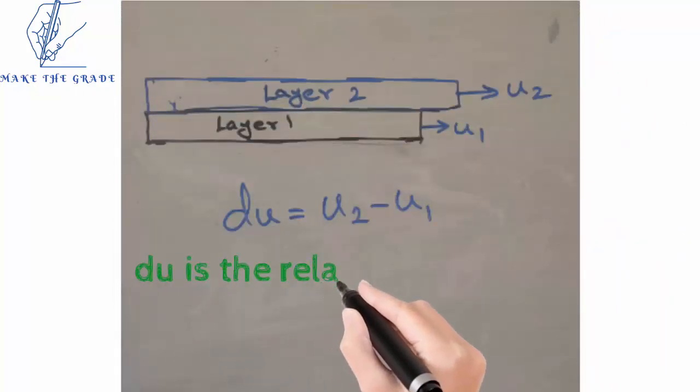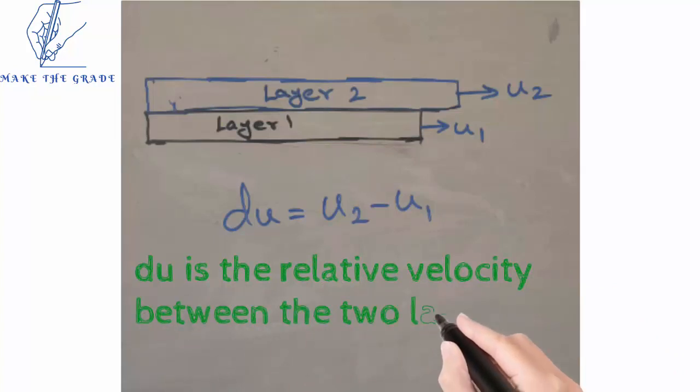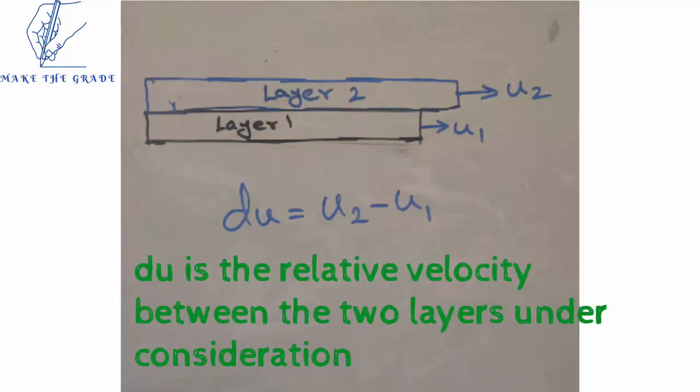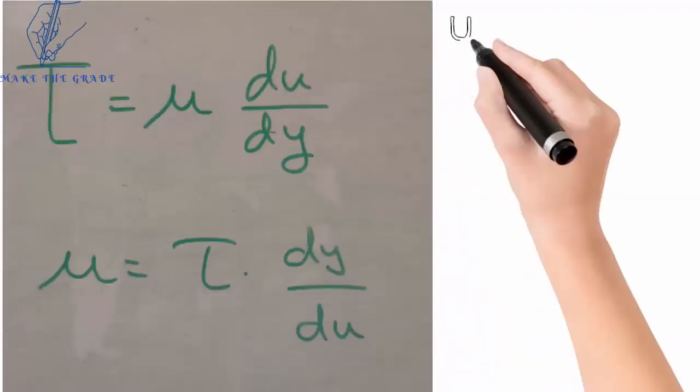Let us concentrate on du. If there are two layers, the first layer moving with velocity u1 and the second layer with u2, the difference in their velocity is du. Using the equation τ = μ(du/dy)...